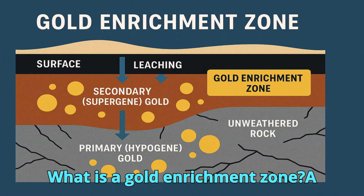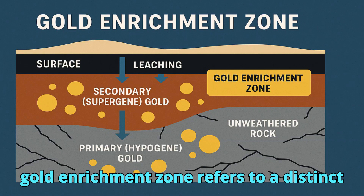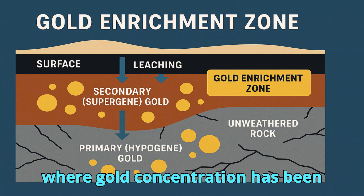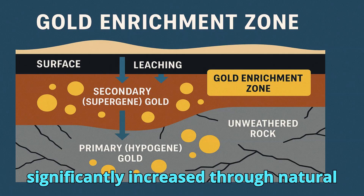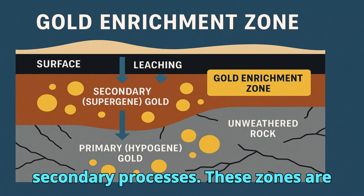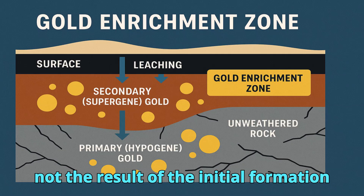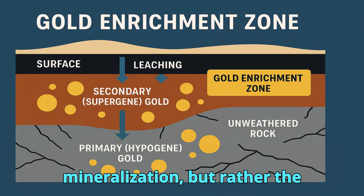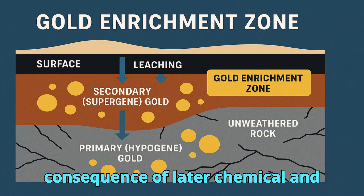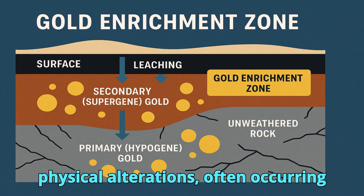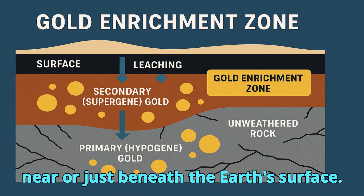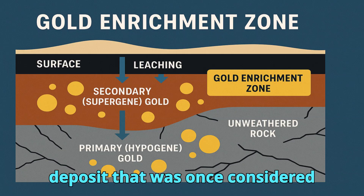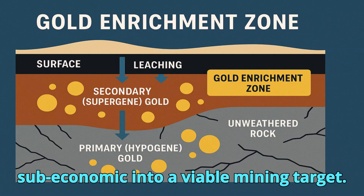A gold enrichment zone refers to a distinct geological layer within a mineral deposit where gold concentration has been significantly increased through natural secondary processes. These zones are not the result of the initial formation of the ore body — known as primary mineralization — but rather the consequence of later chemical and physical alterations, often occurring near or just beneath the earth's surface. This natural enrichment can transform a deposit once considered sub-economic into a viable mining target.